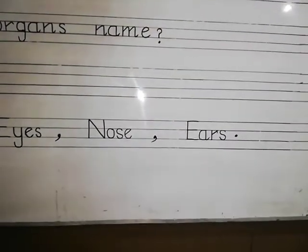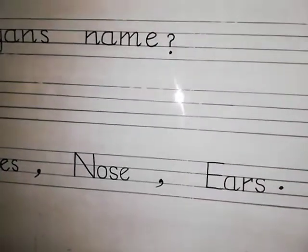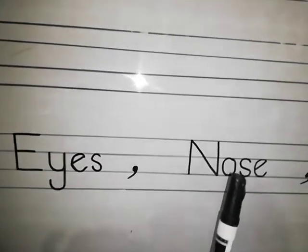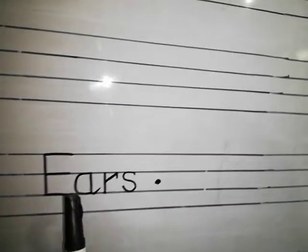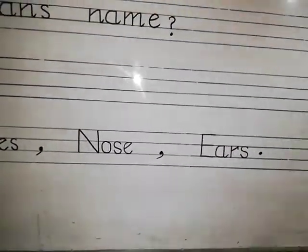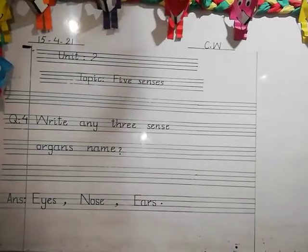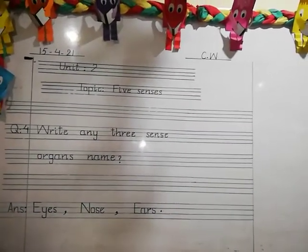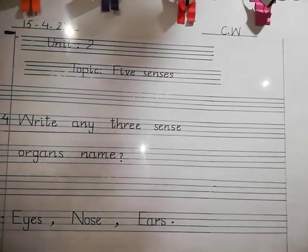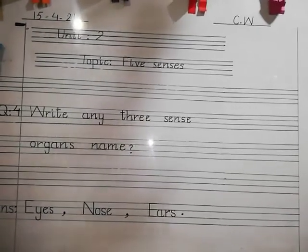You have to write your answer as: EYES, comma, NOSE, comma, EARS. With these, today's question number four is finished. For homework, on the next page write HW instead of CW, and do the same. Take care of your letter formation — touch the lines properly. That's all. Take care of yourself. God bless you.